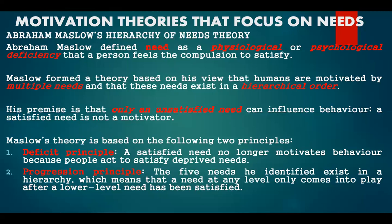You just have to find out what people need, then project yourself as someone who can satisfy that need — that helps you influence the person. Maslow formed a theory based on his view that humans are motivated by multiple needs and that these needs exist in hierarchical order. We have several needs but these needs are in the form of a hierarchy. His premise is that only an unsatisfied need can influence behavior — a satisfied need is not a motivator.